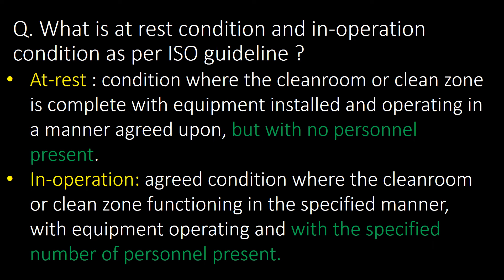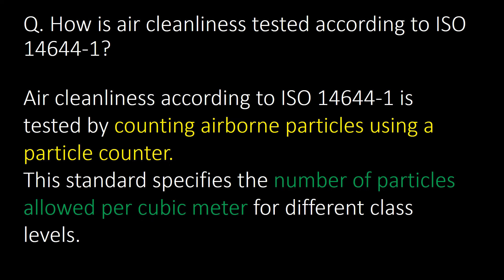The fundamental difference between these two conditions is the presence of personnel. How is air cleanliness tested according to ISO 14644-1? Air cleanliness according to ISO 14644-1 is tested by counting airborne particles using a particle counter. This standard specifies the number of particles allowed per cubic meter for different class levels.